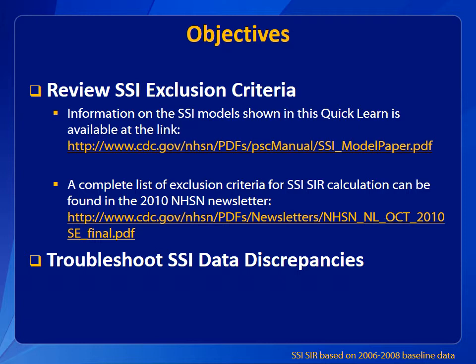The risk-adjusted models for SSI are based on the 2006-2008 baseline data. The journal Infection Control and Hospital Epidemiology published a CDC paper titled Improving Risk-Adjusted Measures of Surgical Site Infection for the National Healthcare Safety Network. The article can be found online at the link shown here. A complete list of exclusion criteria, including cutoffs for extremely long procedure duration, can be found in the 2010 NHSN newsletter. We will also review how to troubleshoot discrepancies in your SSI data.